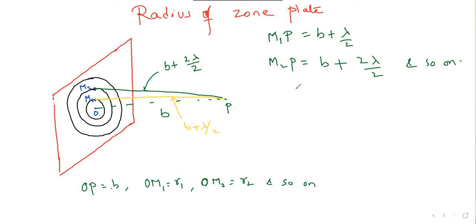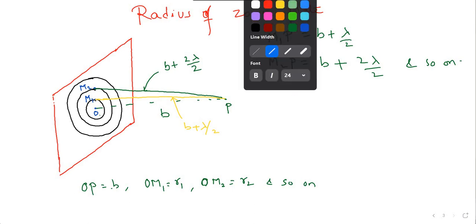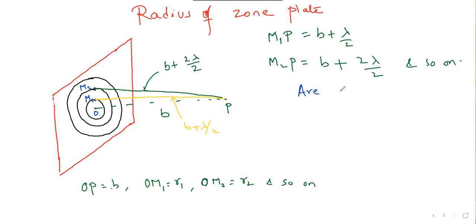Area of first zone. From the figure you see, what is the formula for area? Pi R square. Area of a circle is pi R square. So, pi into, what is the radius of the first zone? OM1. OM1 square. So, pi in bracket OM1 square can be written as M1P square minus OP square.